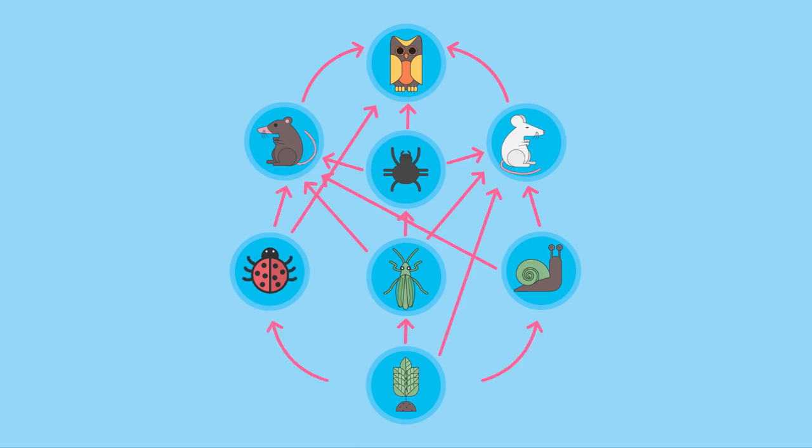When you consider all the food chains in the habitat and join them all together to get a food web, a diagram of the interconnections between lots of organisms, populations are interdependent on each other.